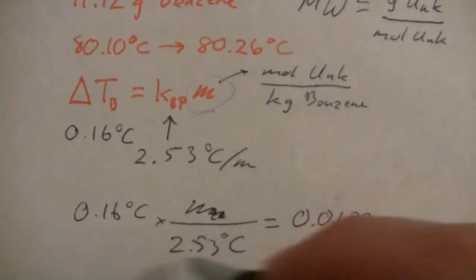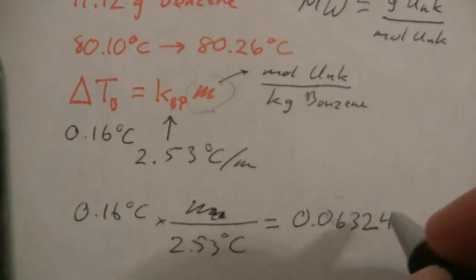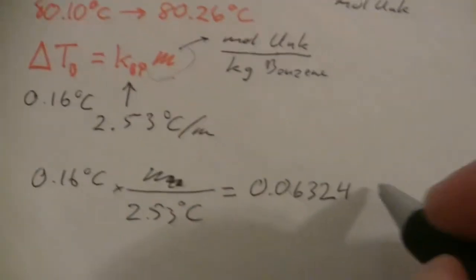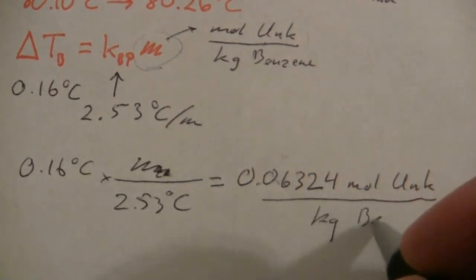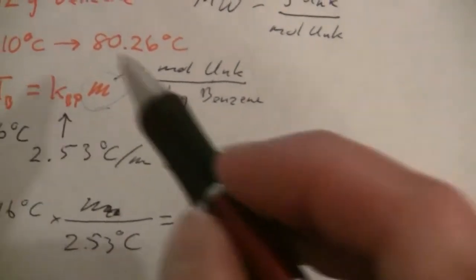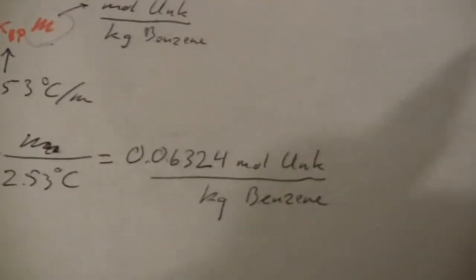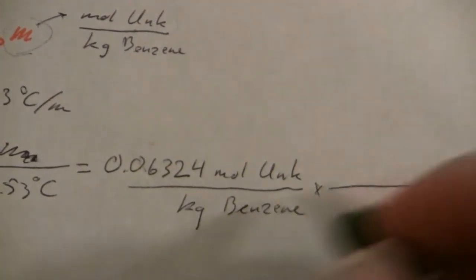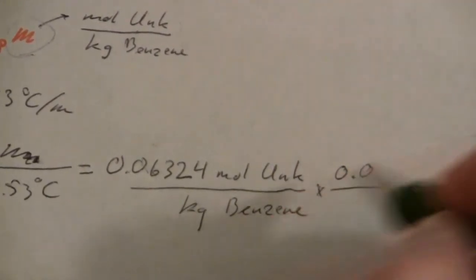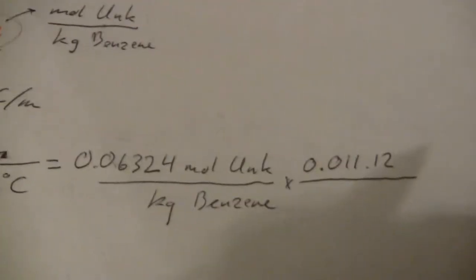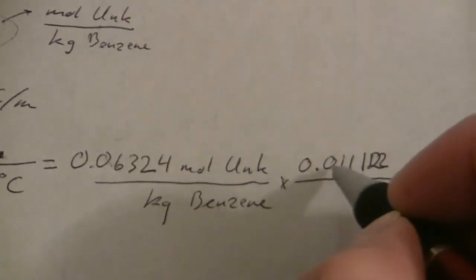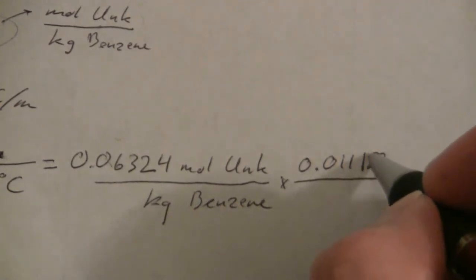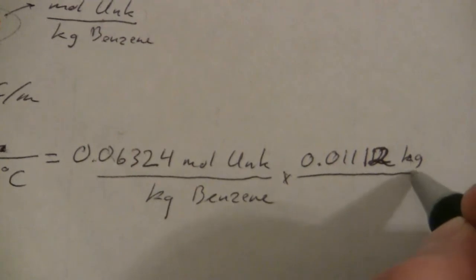Let me go ahead and keep one more significant figure: 0.06324 moles of the unknown per kilogram of benzene. Now this is where my 11.12 grams of benzene comes in, because I can use that to cancel here. If I divide by a thousand to get it into kilograms: 0.0112 kilograms of benzene.